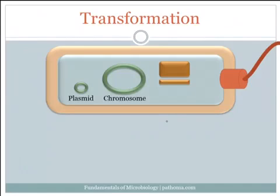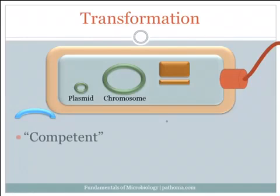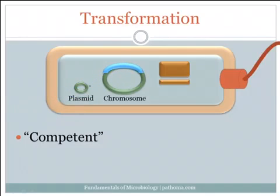The first one we'll talk about is transformation. Let's say this bacterium is moving along and it encounters a raw piece of DNA on the ground that was possibly from a bacterium that was lysed. If it is termed a competent bacterium — meaning that its cell wall possesses properties that allow it to actually take up this raw segment of DNA and incorporate it into its chromosome — then that process is called transformation.